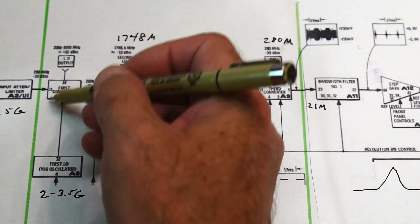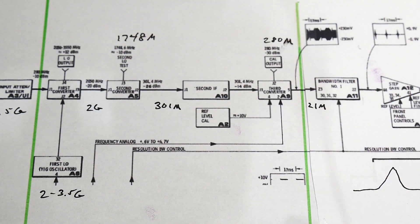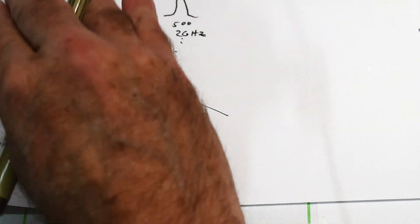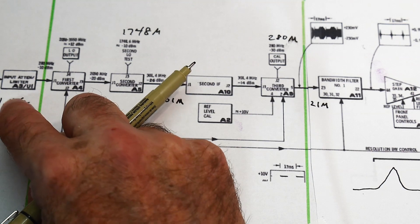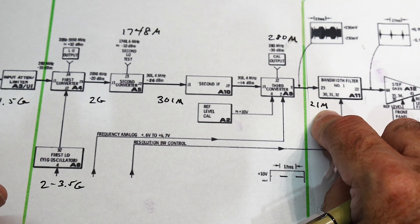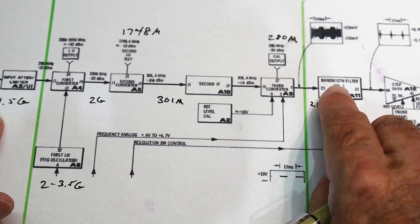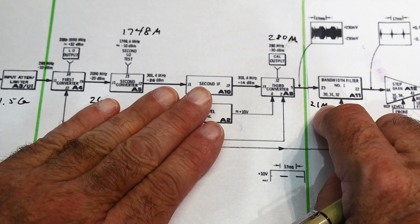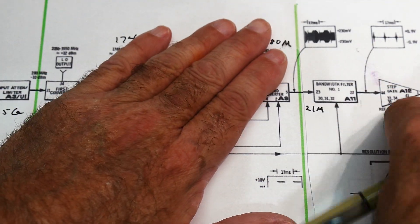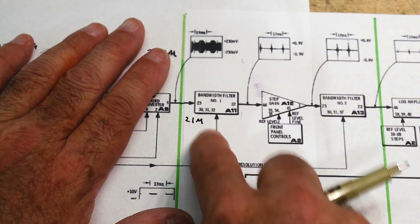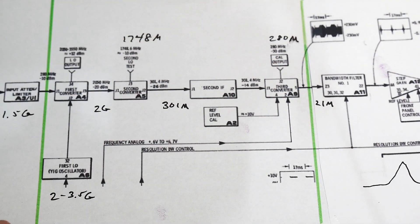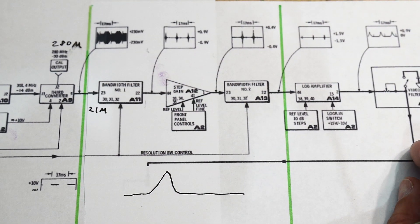You don't need to think of it as overly complicated. Think of it as: we have one local oscillator sweeping, and we just need to convert everything to 21 MHz. We couldn't just do it in one jump directly to 21 MHz, because that would put us right in the middle of frequencies we're trying to see. We need to jump up first and then jump down to reach our 21 MHz target. If we could build a filter at 2 GHz easily, we could have stopped there, but it's much easier to work at 21 MHz.